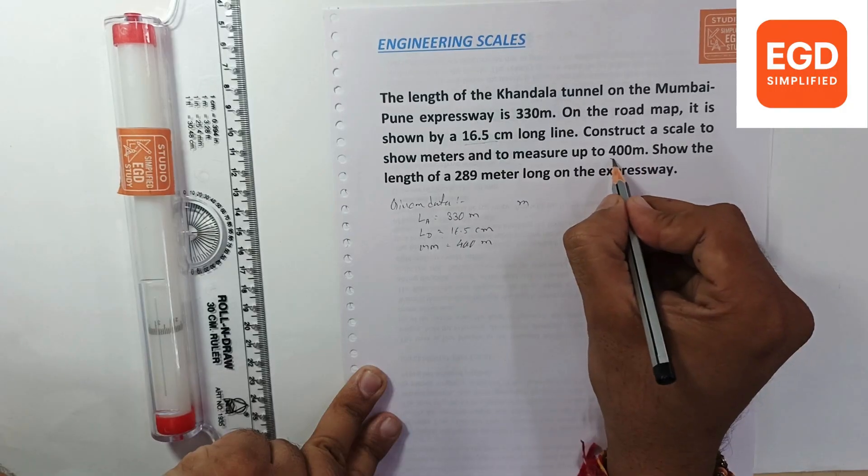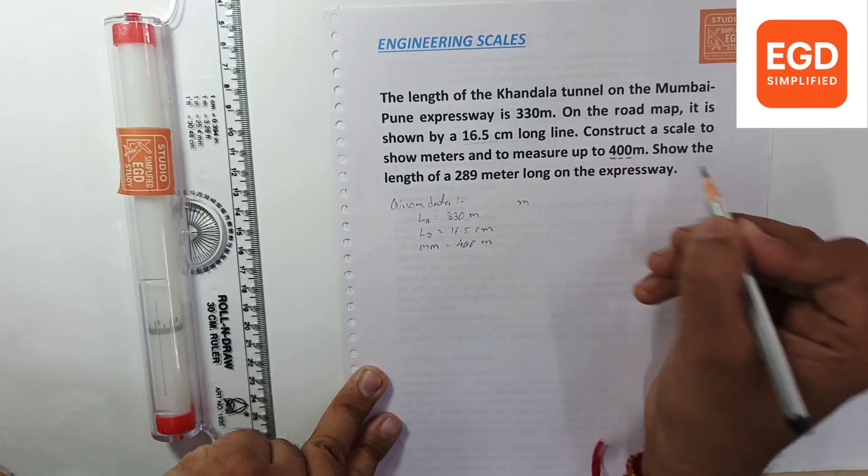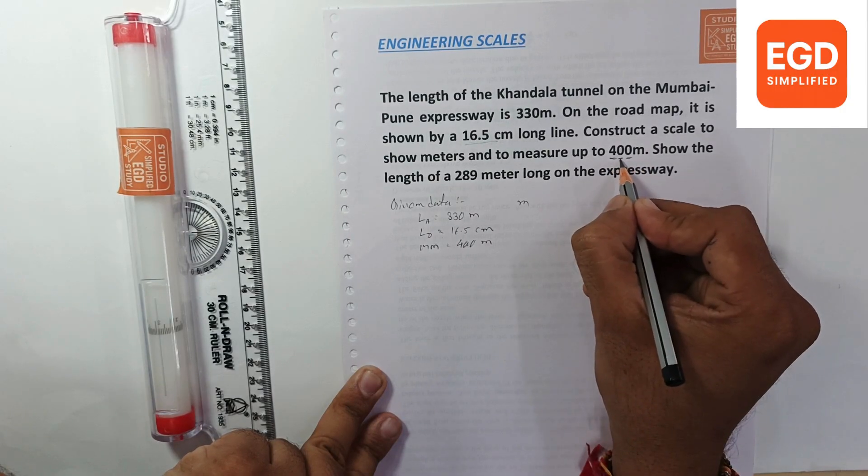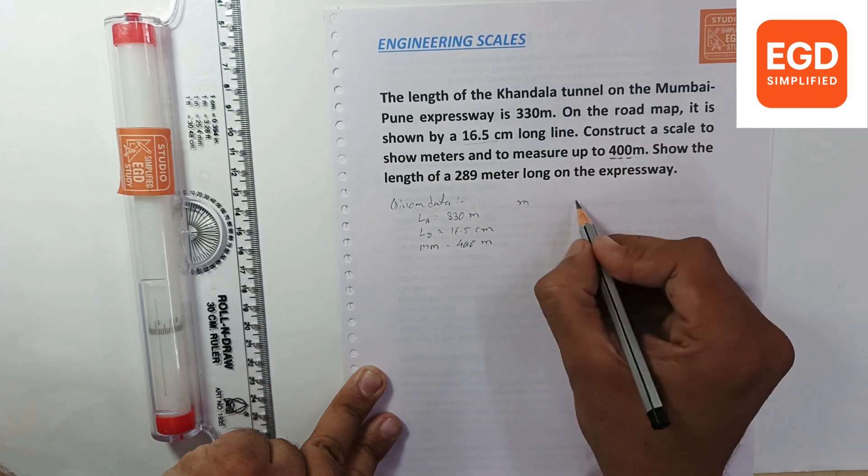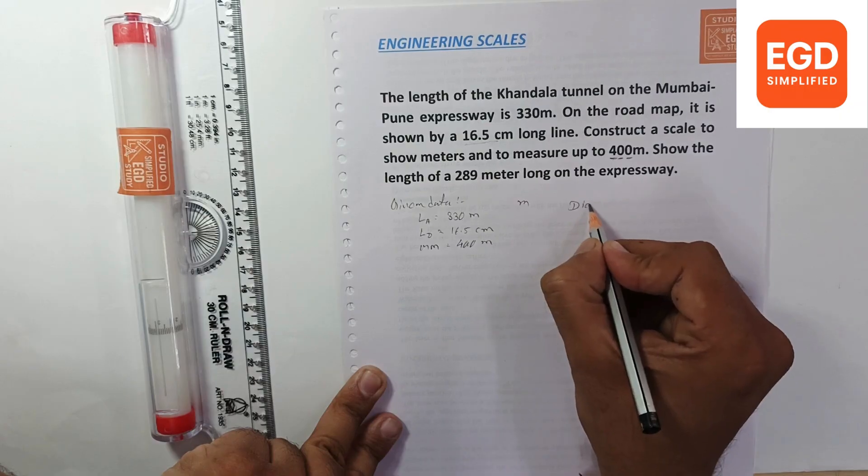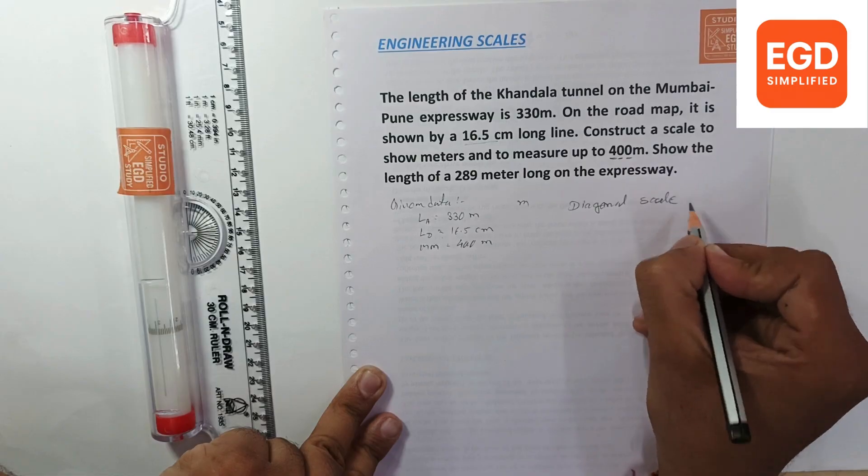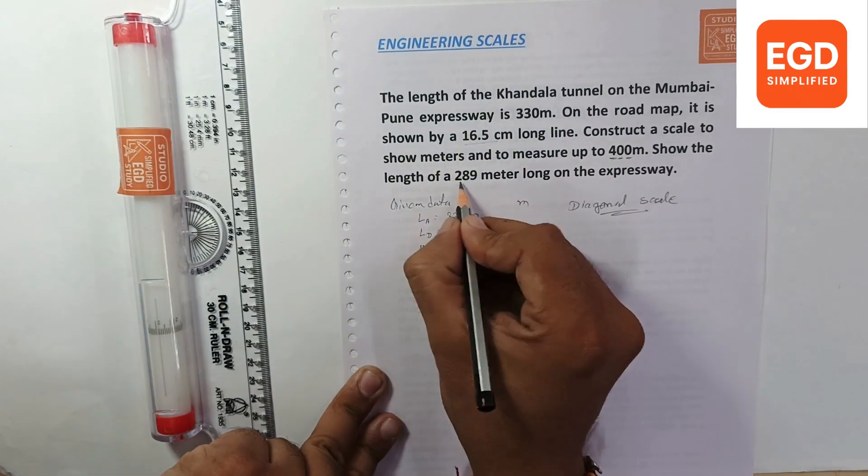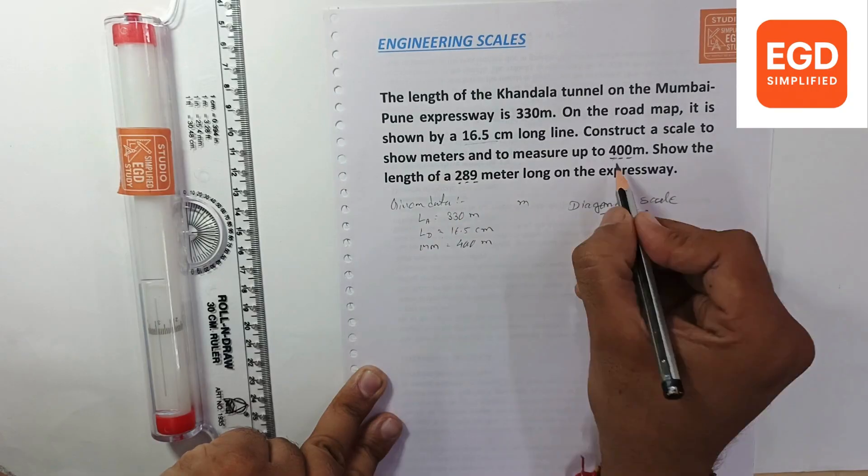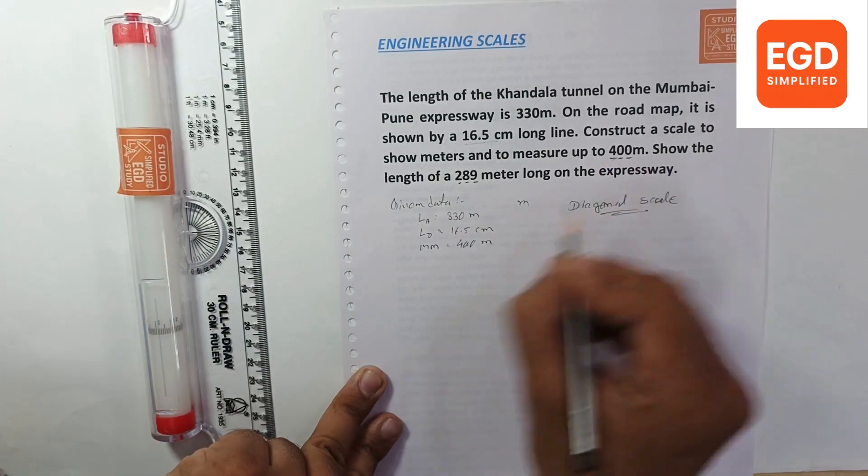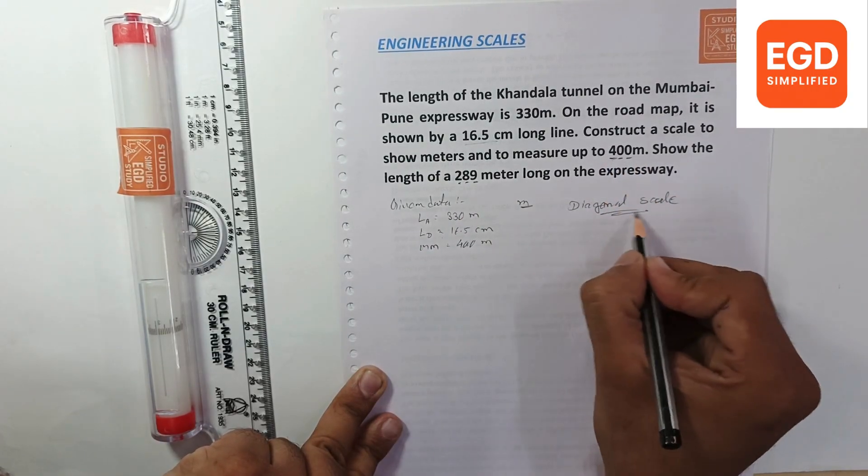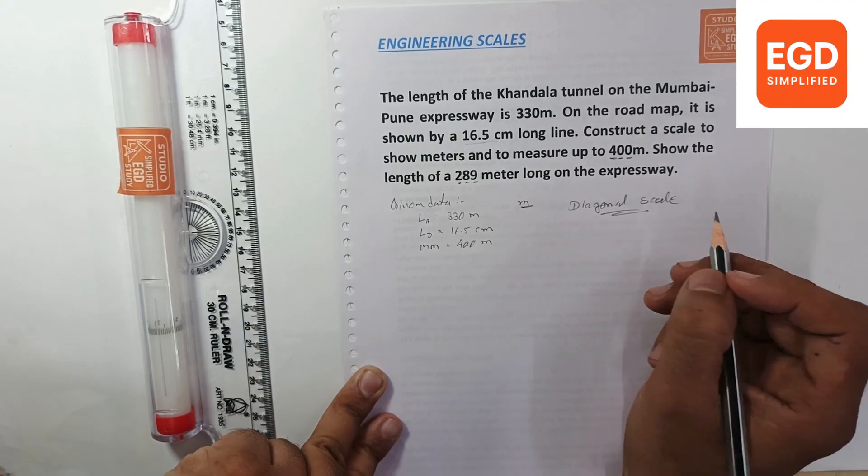Now you have to see that there are three digits: unit, 10th, and 100th. So we have to plot a diagonal scale. Here it is also given. If there are three digits given and single unit is there, don't be confused, just go for a diagonal scale.